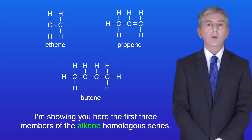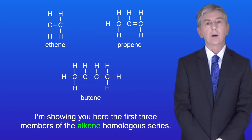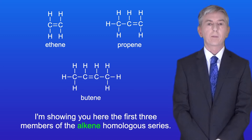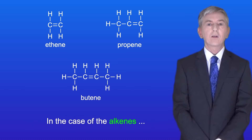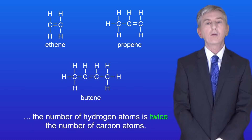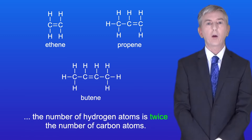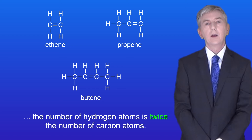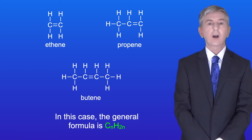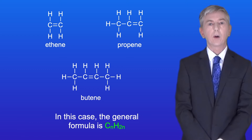I'm showing you here the first three members of the alkene homologous series. In the case of the alkenes the number of hydrogen atoms is twice the number of carbon atoms. So in this case the general formula is CnH2n.